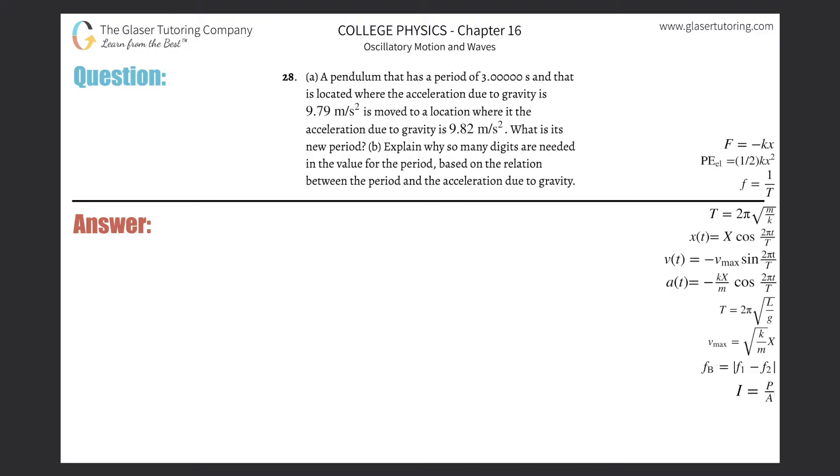Number 28, letter A. A pendulum that has a period of three seconds and that is located where the acceleration due to gravity is 9.79 meters per second squared is moved to a location where the acceleration due to gravity is 9.82 meters per second squared. What is its new period?